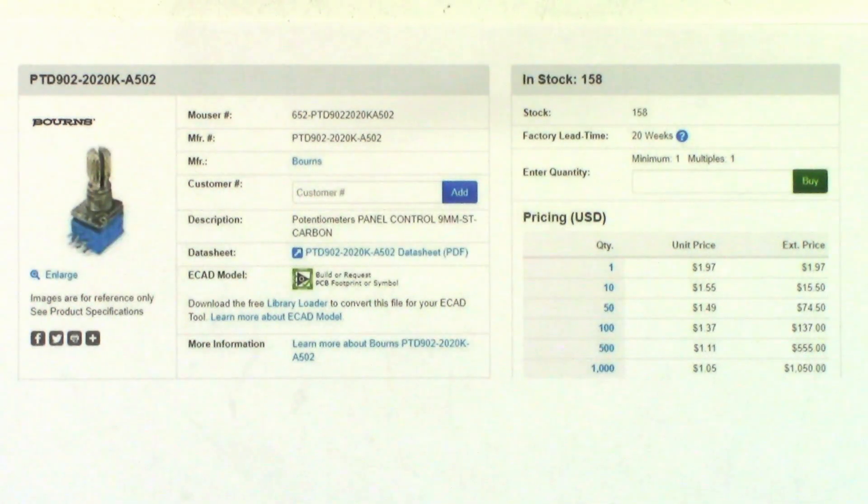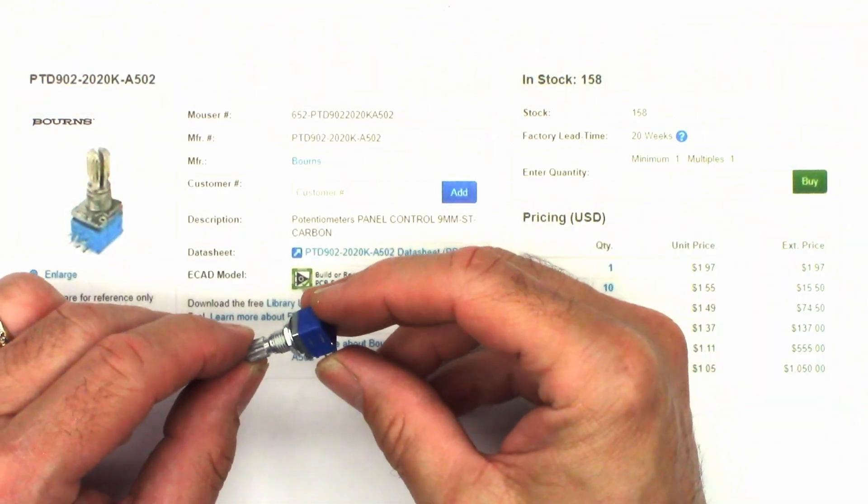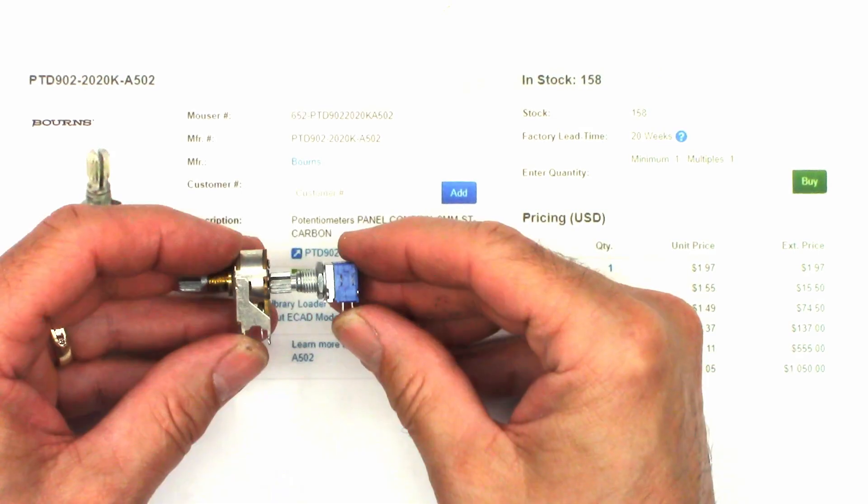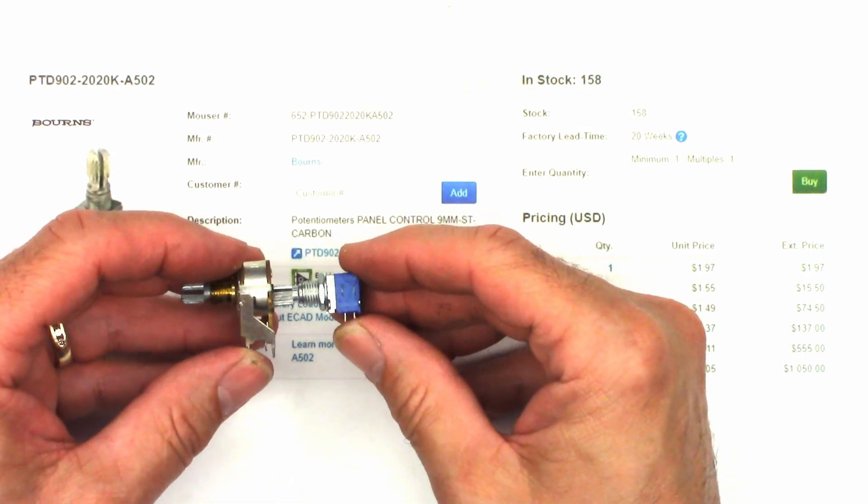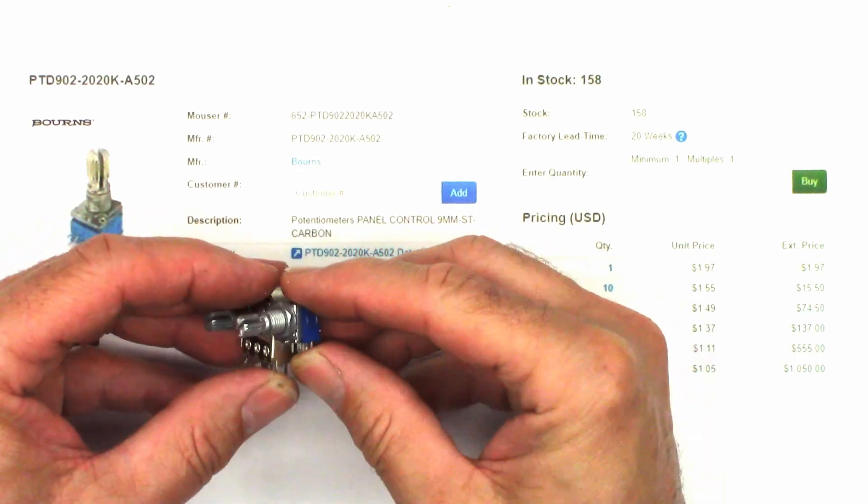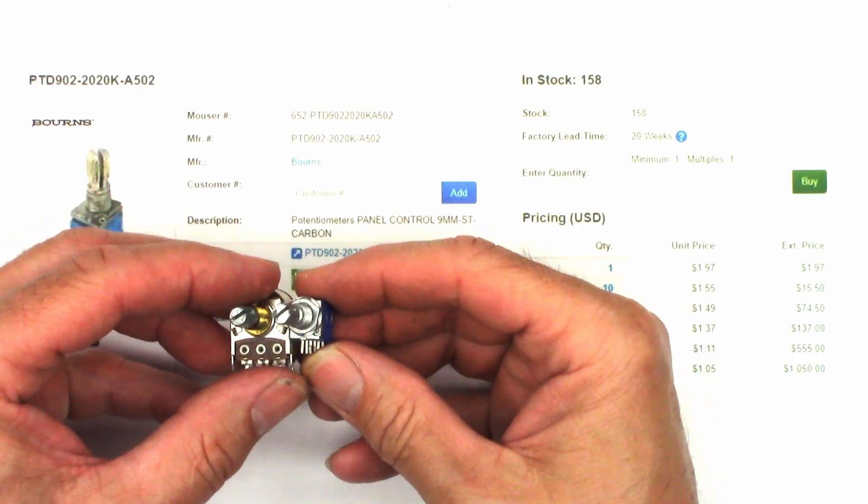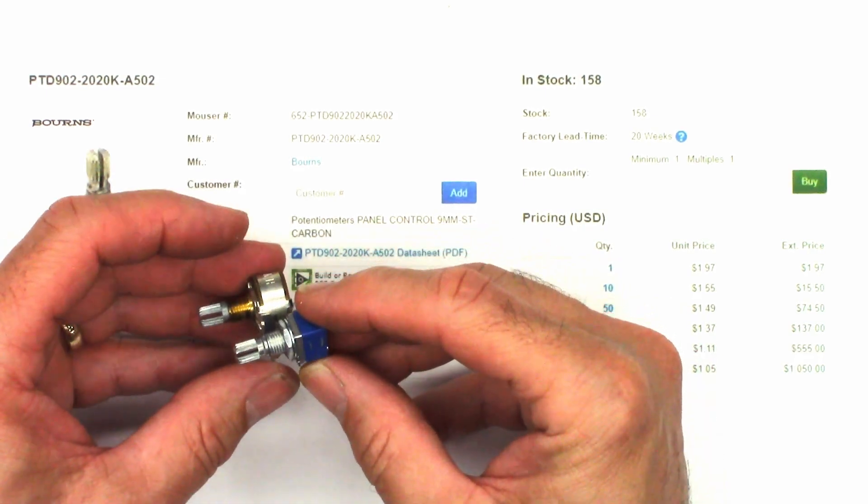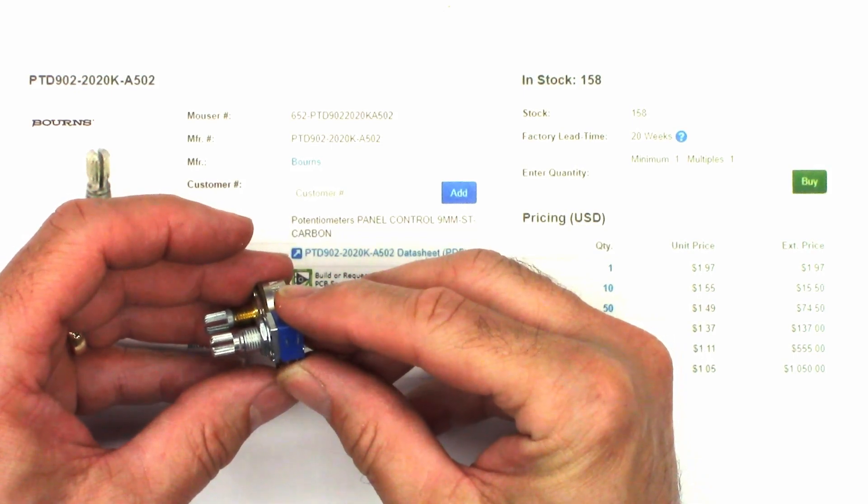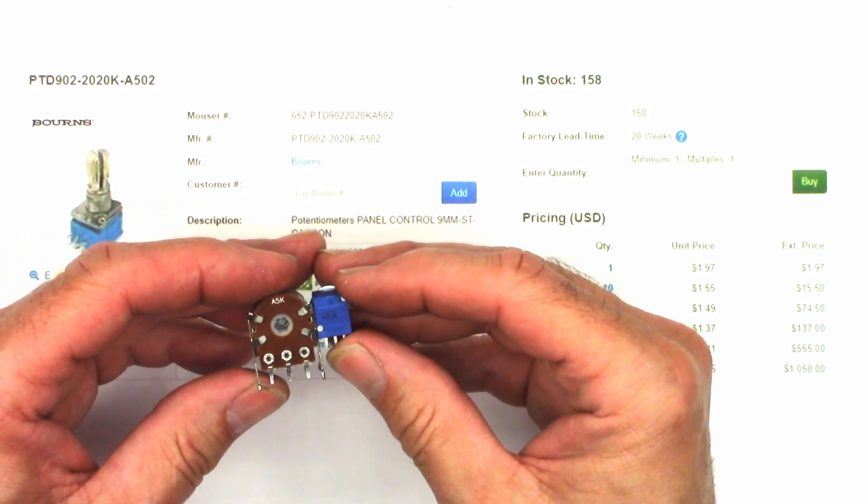So for the main level control, I chose this pot, which is a 5K Audio Taper Potentiometer. Physically, it is a lot smaller than the original one was. There is a size comparison between the original and the replacement. I did have to go ahead and trim the shaft because the original shaft was much longer. I wanted to try to give it the same footprint. It is an Audio 5K Taper Pot.